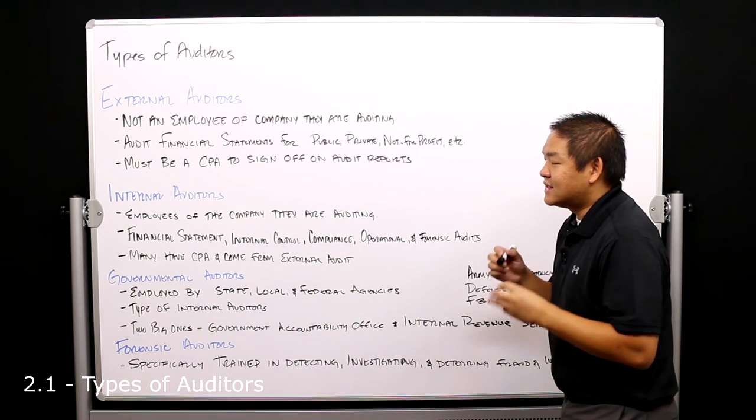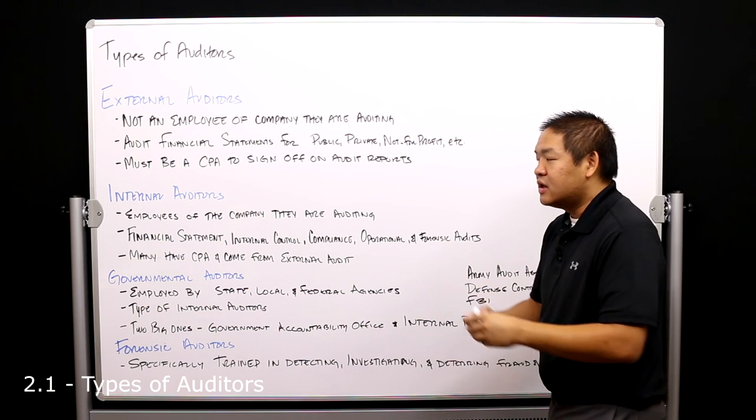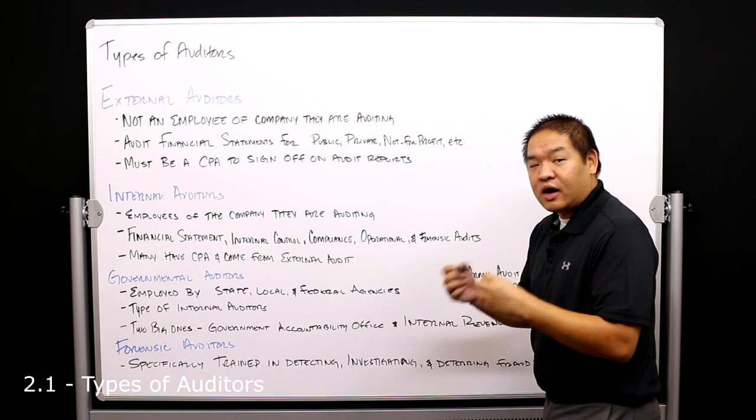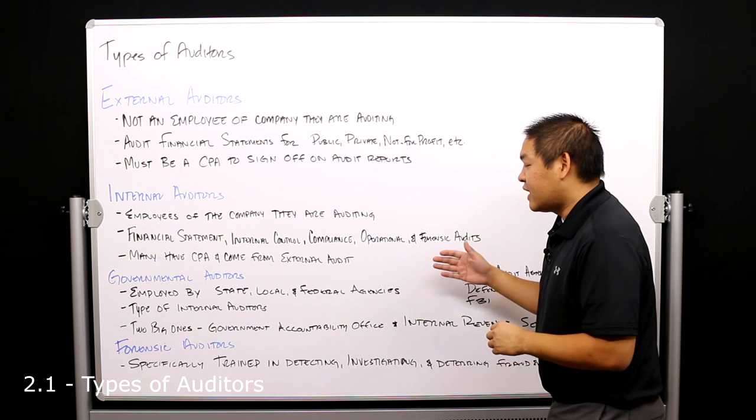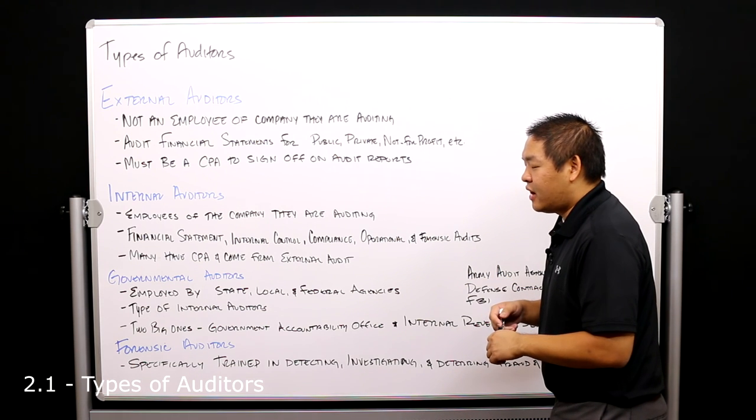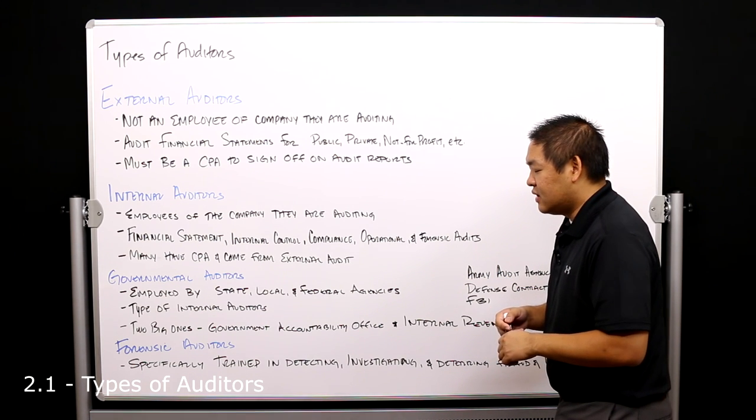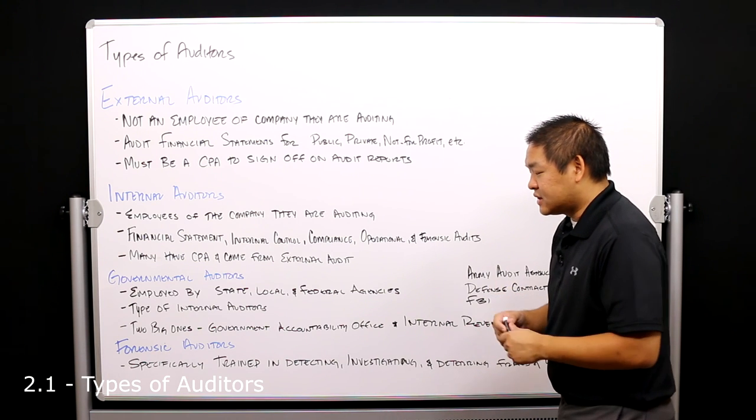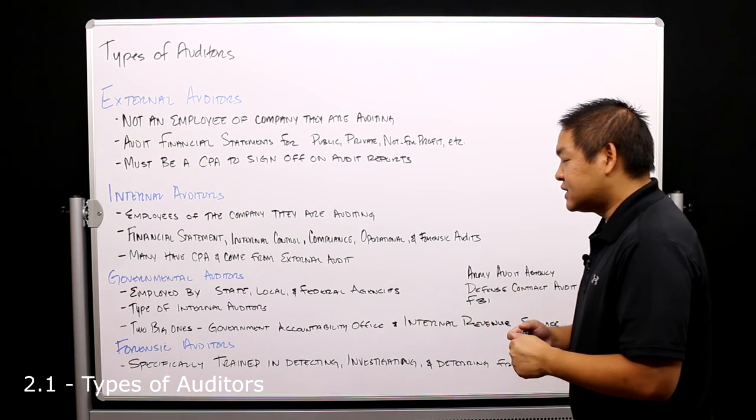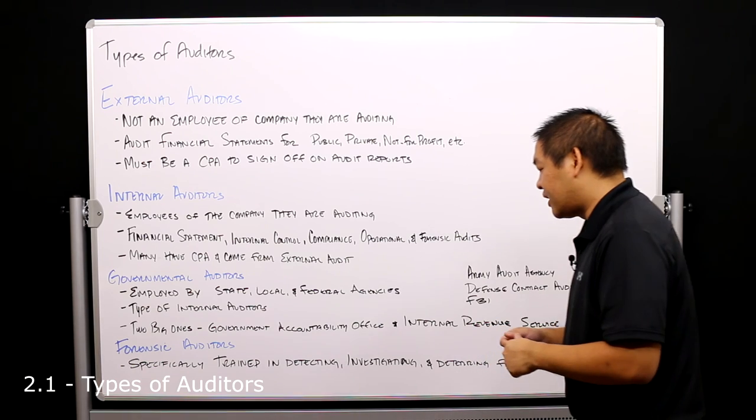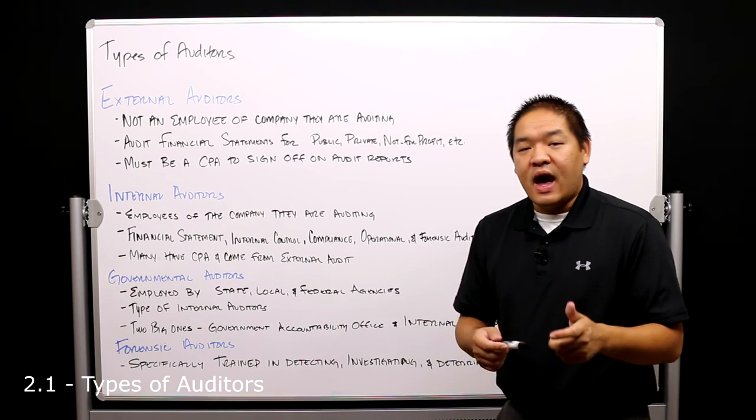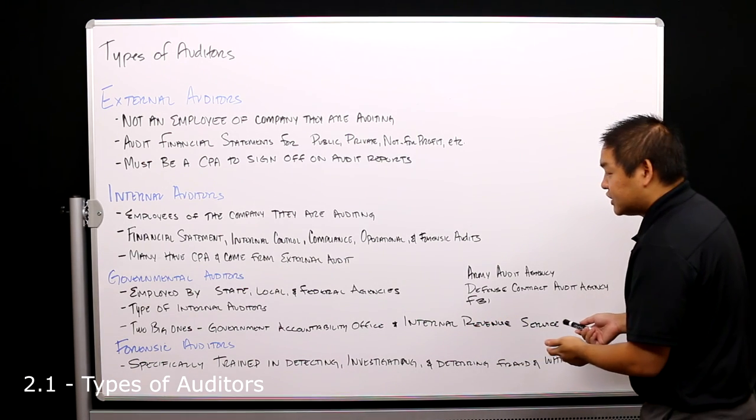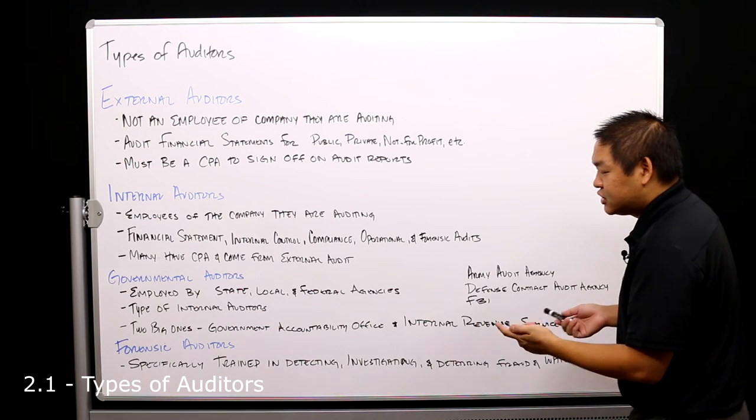The next type of auditors is a type of internal auditor. So these are technically internal auditors at the end of the day, but they are governmental auditors. Now governmental auditors are employed by state, local, and federal agencies. Again, they're a type of auditor. The two big ones that we know of is the Government Accountability Office, or the GAO, and then the Internal Revenue Service is also governmental auditors.